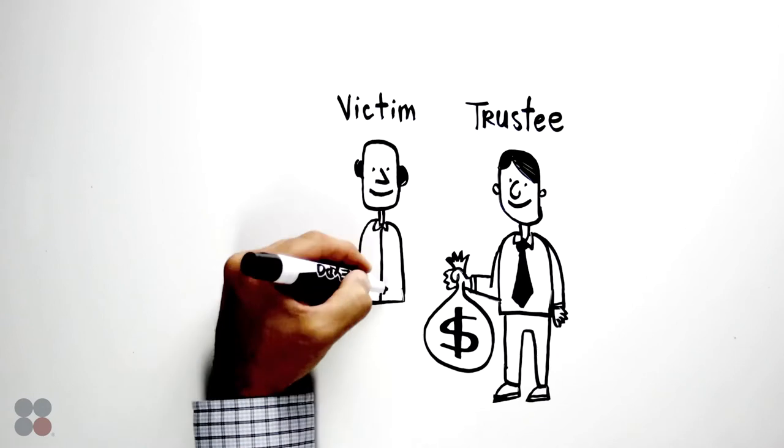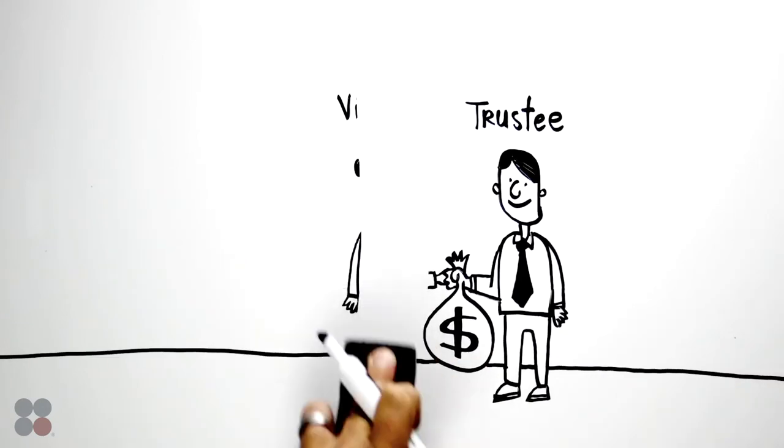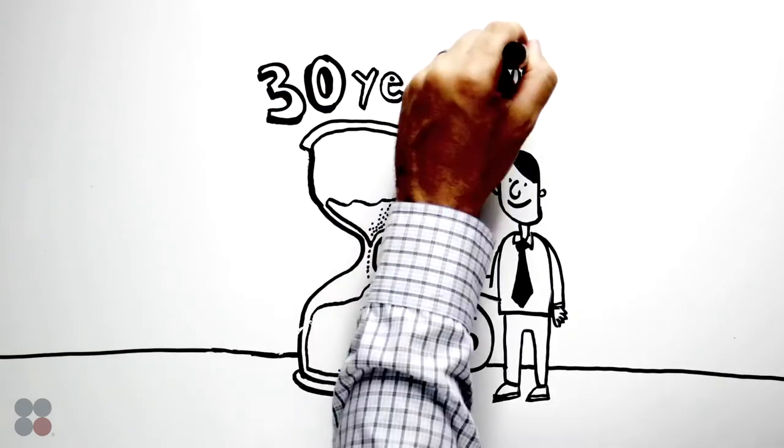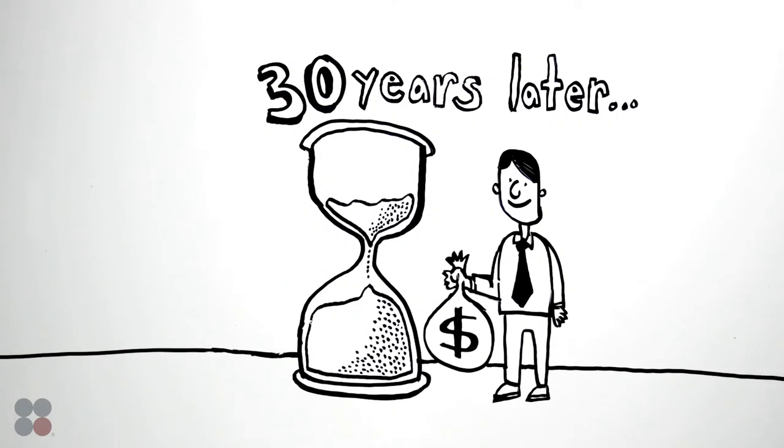The courts have appointed trustees to pay money to every person who has a valid claim. 30 years later, and contrary to popular belief, the trusts are still paying victims today.